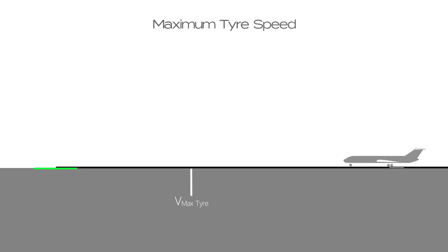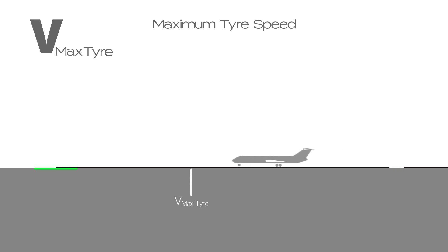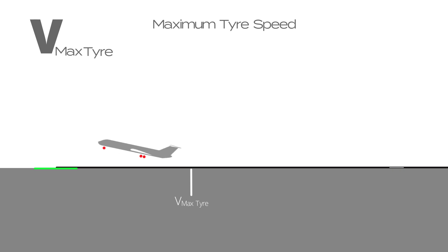Maximum tyre speed is represented by VMAX tyre. This is the fastest speed an aeroplane can accelerate to during the takeoff run without causing tread loss of a tyre.